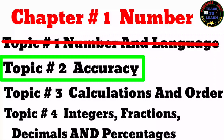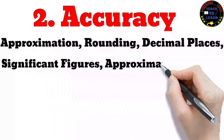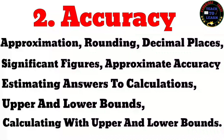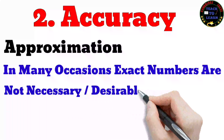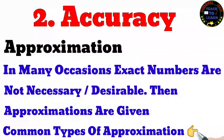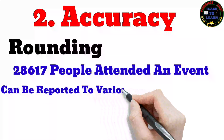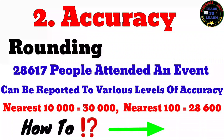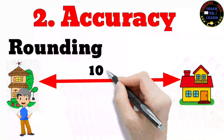Topic two: accuracy. In this topic we will learn about approximation, rounding, decimal places, significant figures, approximate accuracy, estimating answers to calculations, and upper and lower bounds. In many instances exact numbers are not necessary or even desirable, so approximations are given. For example, if 28,617 people attended a gymnastic competition, this figure can be reported to various levels of accuracy.